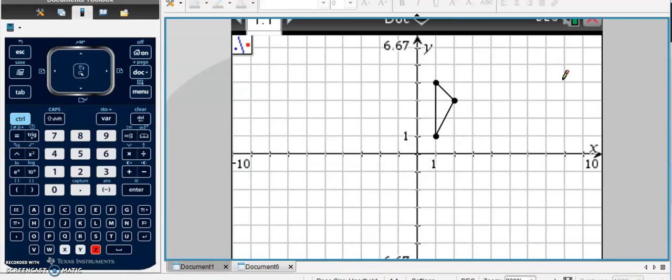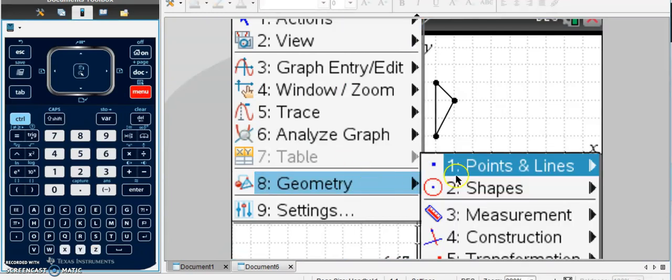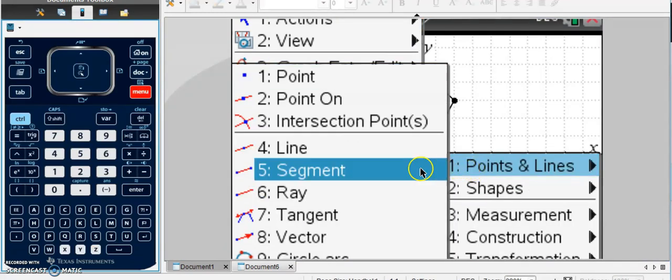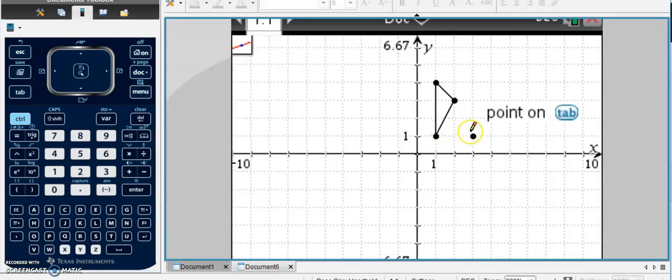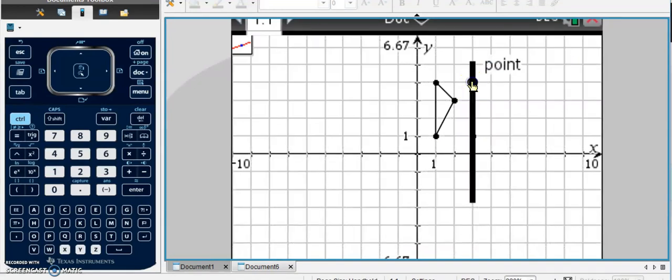let's say I wanted to reflect it across the line X equals 3. What I could do is I could go to Menu, Geometry, Points and Lines, and I could add a line. So I said I'm going to reflect it across the line X equals 3, so I go to X equals 3, and I create a line right there.